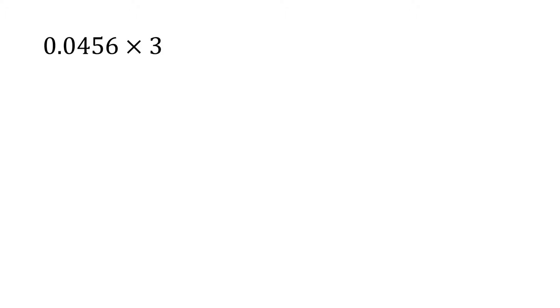Let's try it again with a different setup. In this question, we have 0.0456 times 3. We haven't dealt with numbers smaller than 0 yet, but the strategy is the same. We're going to multiply normally, ignoring the decimal. So 0.0456 times 3. 3 times 6 gives us 18, carry the 1.